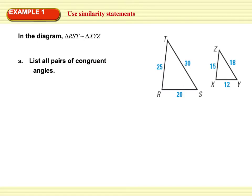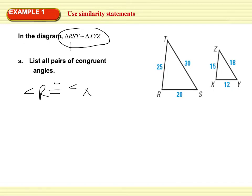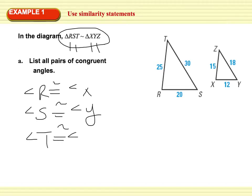First I want to list all the pairs of congruent angles. The statement says that triangle RST is similar to triangle XYZ. So we know angle R is congruent to angle X, because they're both listed first. Angle S is congruent to angle Y, because they're both listed second. Angle T is congruent to angle Z, because they're both listed third.